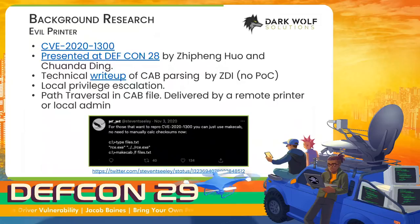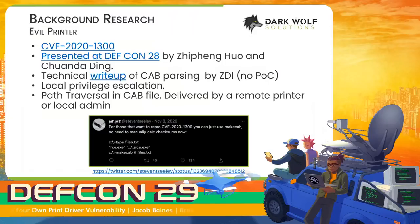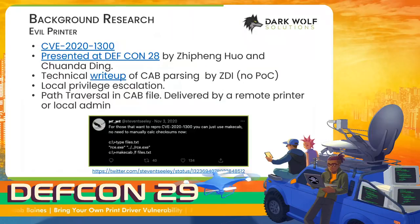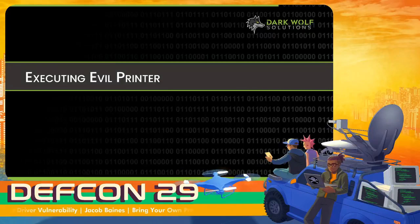CVE 2020-1300, or Evil Printer, was presented at DEFCON 28 last year. Again, this is a local privilege escalation using the printer subsystem, but this time with a cab file delivered by a remote printer. ZDI wrote up some technical details about the cab file, but other than Steve and Seeley's suite in November, I haven't seen anyone publish a full exploit for this one. I loved the DEFCON 28 presentation, and it served as the jumping off point for my own research. Because Evil Printer was so important to my thought process, I want to spend a few minutes just walking through the attack in its entirety.